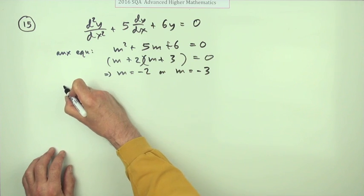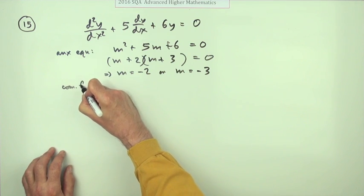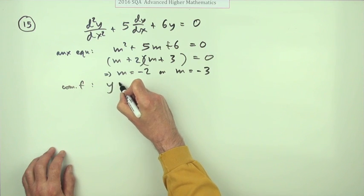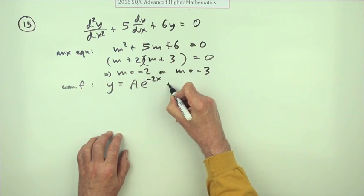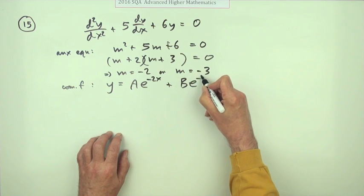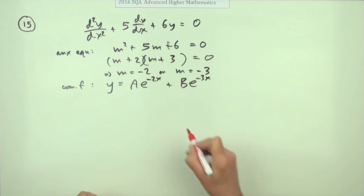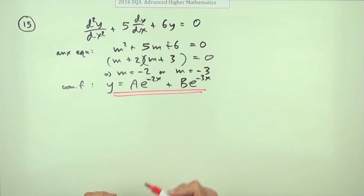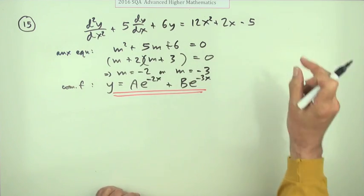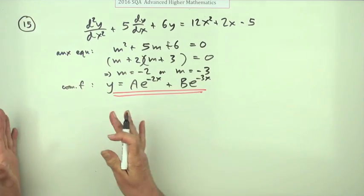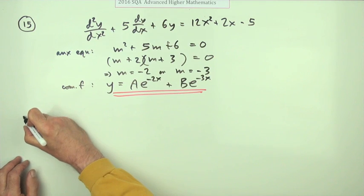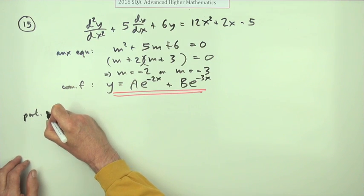So now you've got your complementary function, which will be y equals so many lots of e to the negative 2x, plus so many lots of e to the negative 3x. Now we need the particular integral. I think I'll need more space here. I'm going to put it over here for this particular integral.